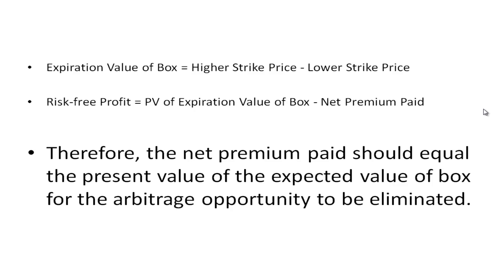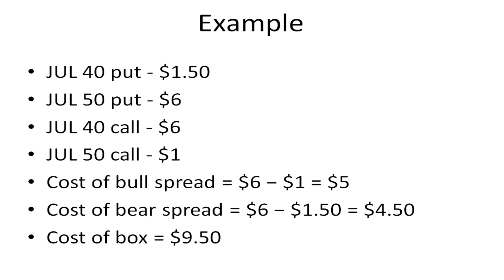Let's look at an example. Suppose a July 40 put sells for $1.50 and a July 50 put sells for $6. To create a bear spread, you would buy the 50 put and write the 40 put, for a cost of $4.50.